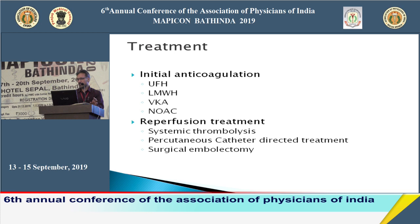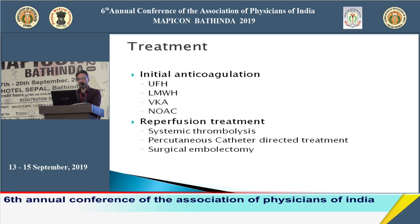Regarding guidelines: systemic thrombolysis is a Class 1 indication for high-risk pulmonary embolism. Surgical pulmonary embolectomy is also a Class 1 indication in patients where thrombolysis is contraindicated. Percutaneous catheter-directed treatment is actually a Class 2a indication — discouraged as a first-line approach — and routine use of IVC filters is a Class 3 indication.